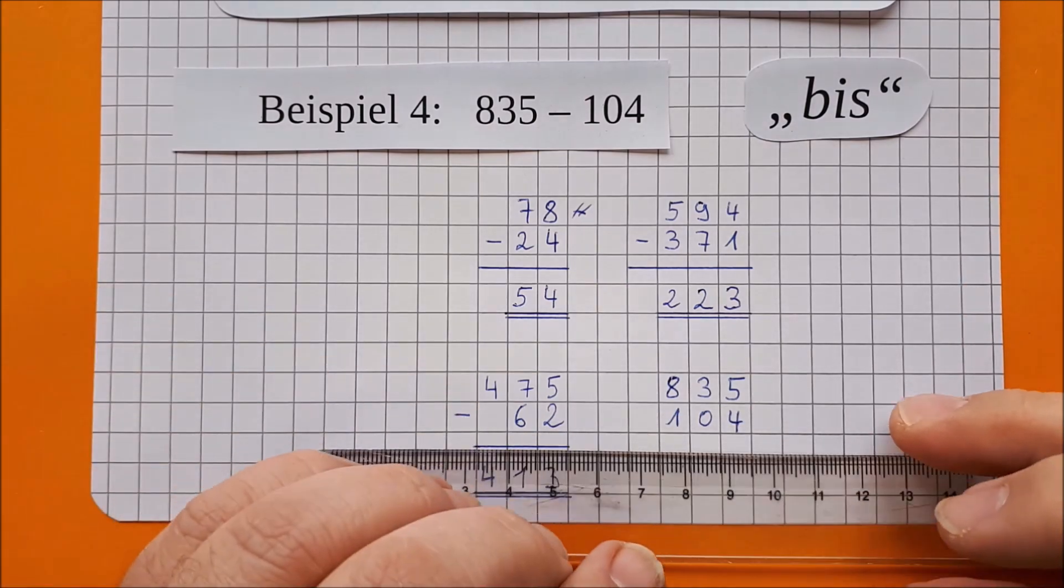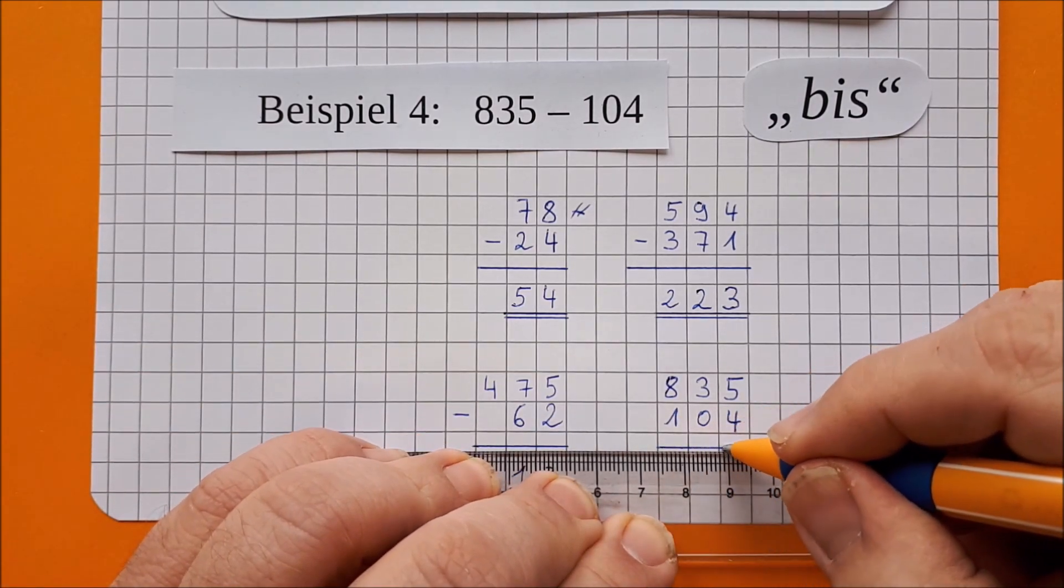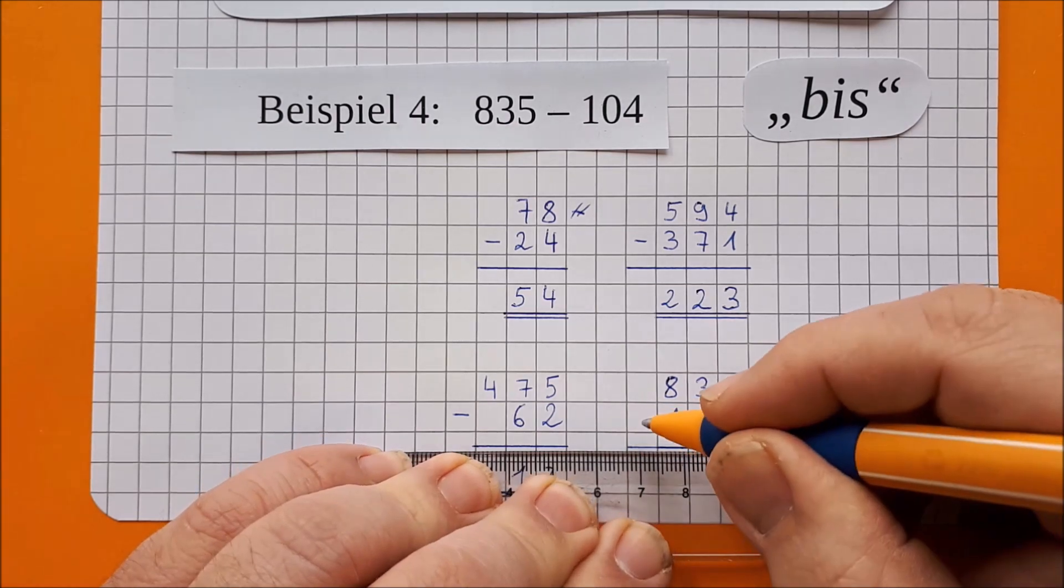So, 835 minus 104. Strich in die Mitte der Kästchenreihe. Und ein davor, wo das Minus ist.